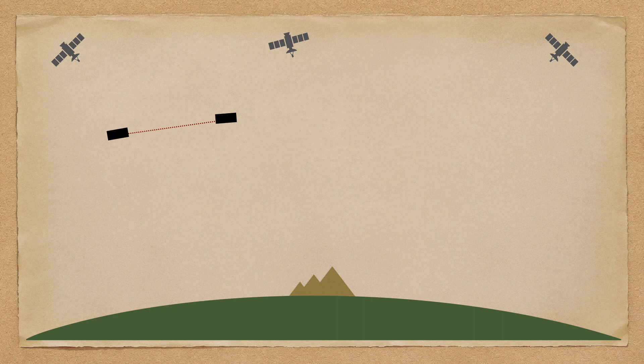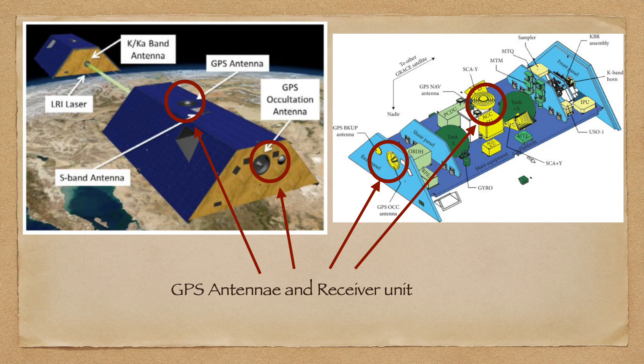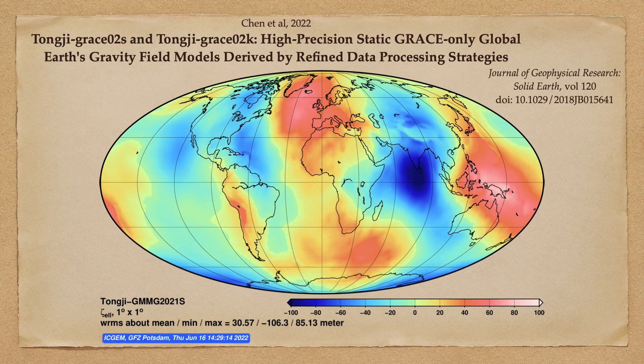The resulting variations in inter-satellite distance are measured using high-precision laser ranging techniques that are accurate to within one micron. As with most near-Earth satellite missions, the positions of the craft are recorded via onboard GPS receivers. Careful analysis of the inter-satellite range data allows us to reconstruct Earth's gravitational field, and combining it with all the other data allows us to reconstruct the geoid with a spatial resolution of about 10 kilometers and a vertical accuracy of about 2 centimeters.